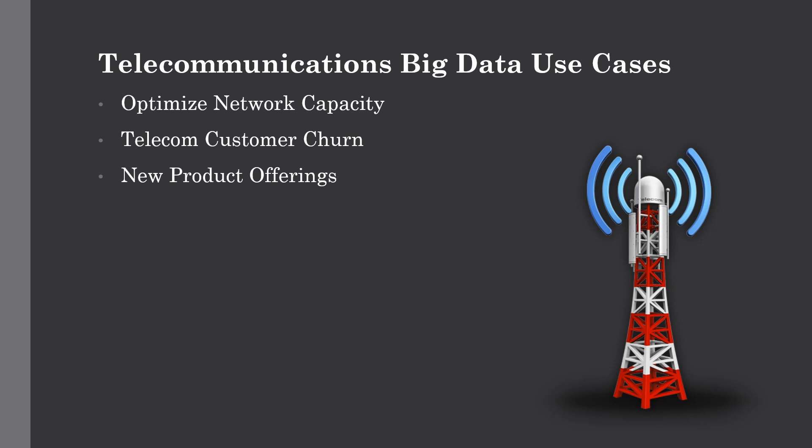The first one is optimizing network capacity. Optimal network performance is very essential for any telecom's success. Network usage analytics can help companies identify areas with excess capacity and reroute bandwidth as needed. Big data analytics can help them plan for infrastructure investment and design new services which meet customer requirements.